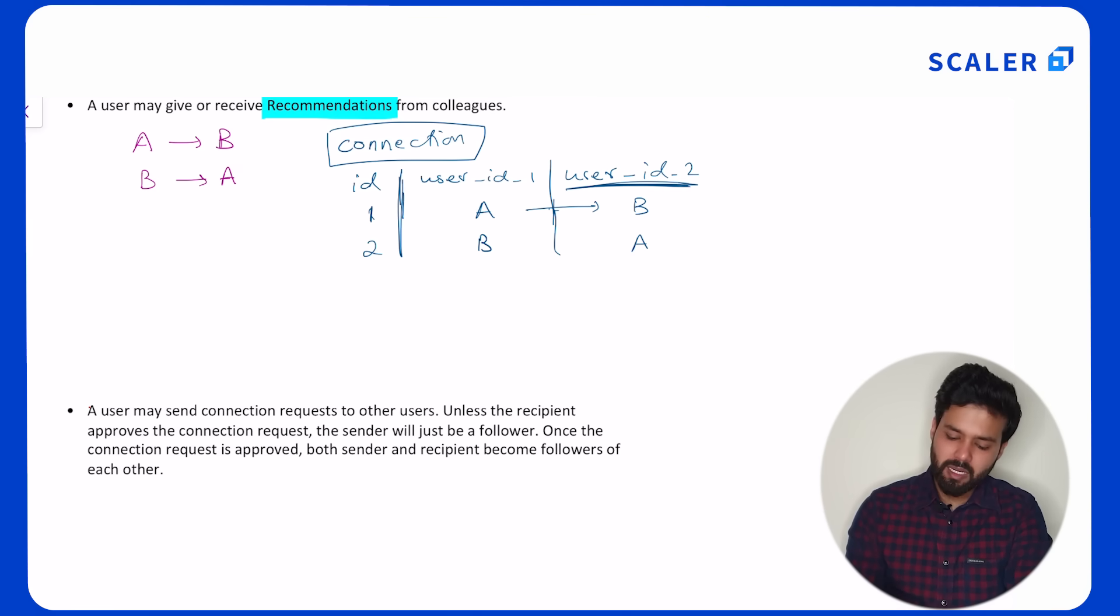The problem, however, is that I'm taking two times the space that I should be taking. So to optimize on space, what I can do is have one Boolean column called is_accepted. Now, if A and B are a connection, not a follower—that means A sent a request to B and B accepted that particular request—I can keep the accepted flag as true. Otherwise, it will be false. Now, if I want to find out all the followers of A, if the accepted flag is true, then I'll query based on either user ID 1 should be equal to A or user ID 2 should be equal to A. If it is false, then only user ID 2 should be equal to A.